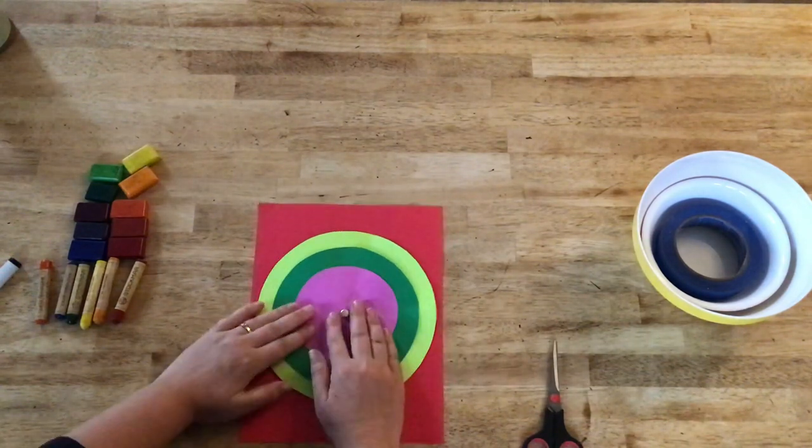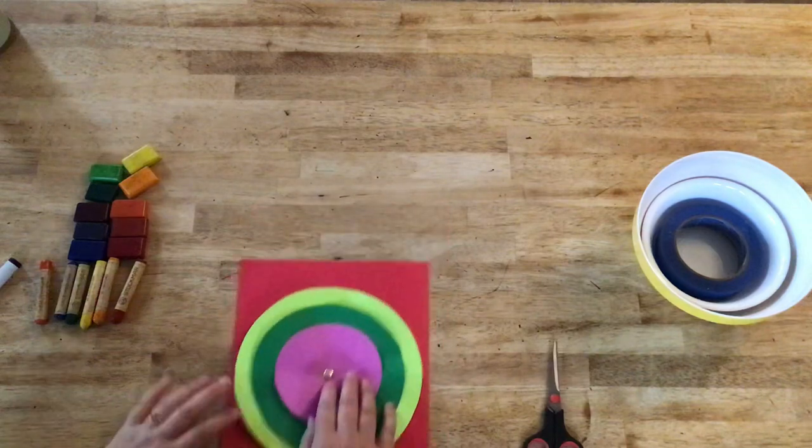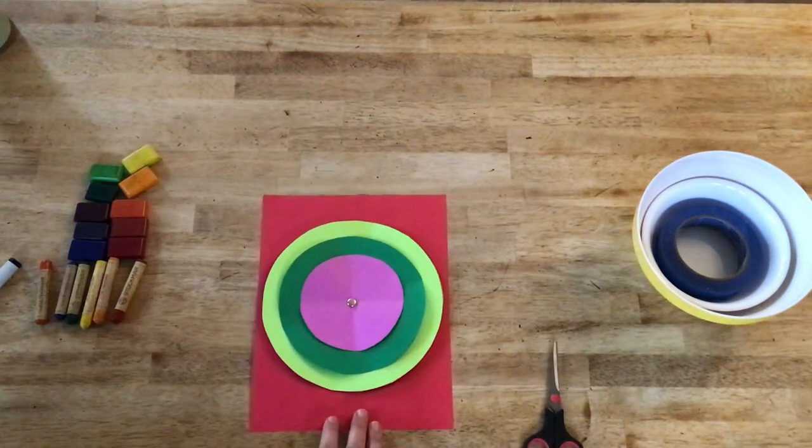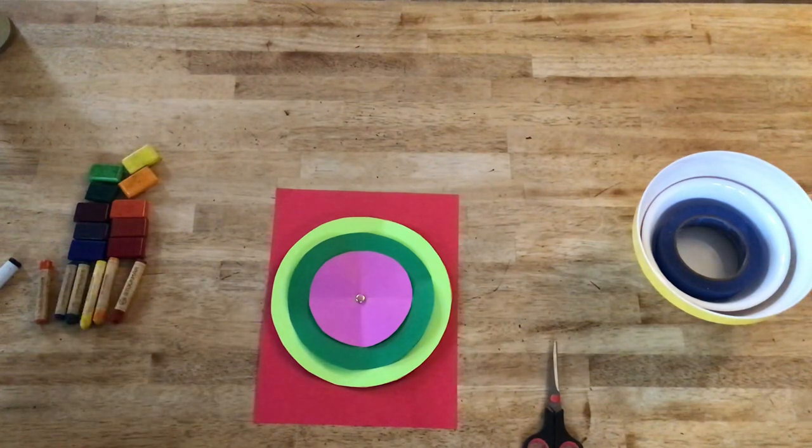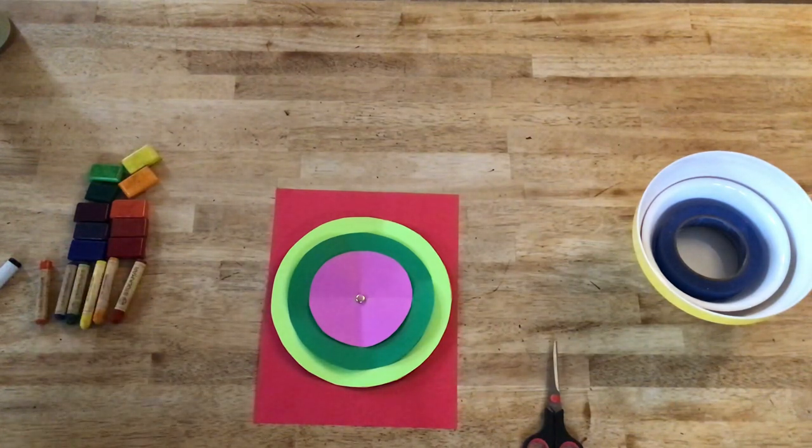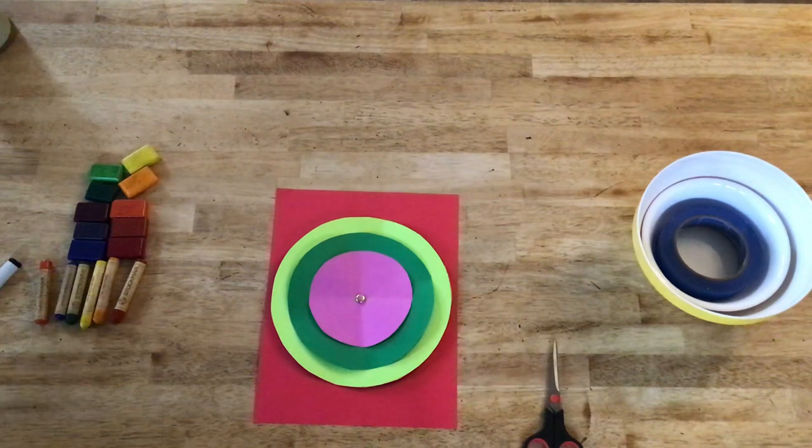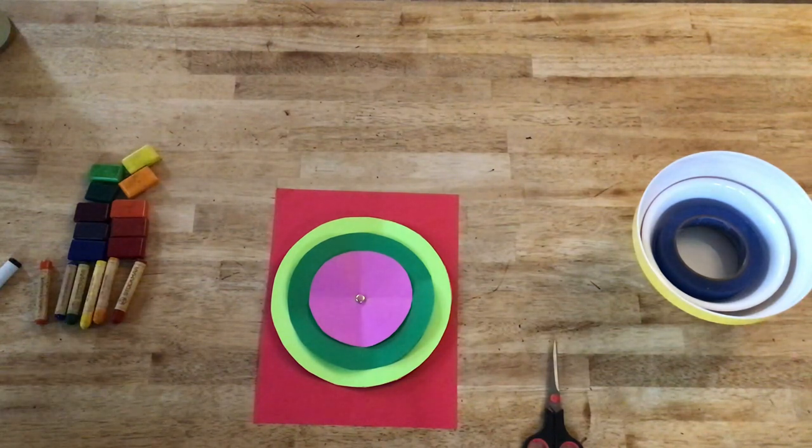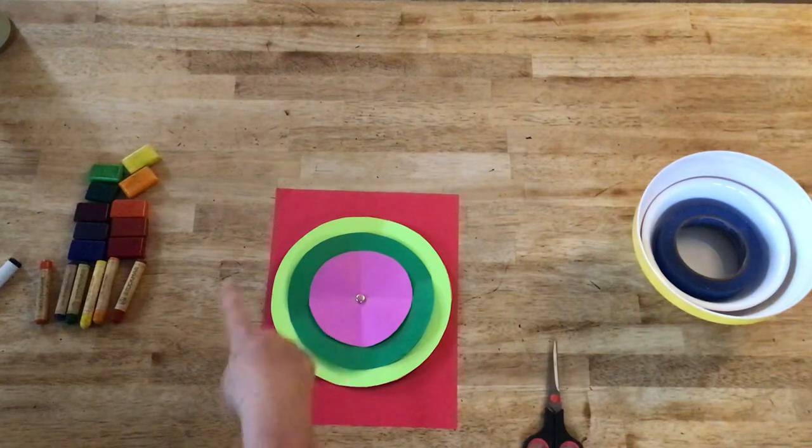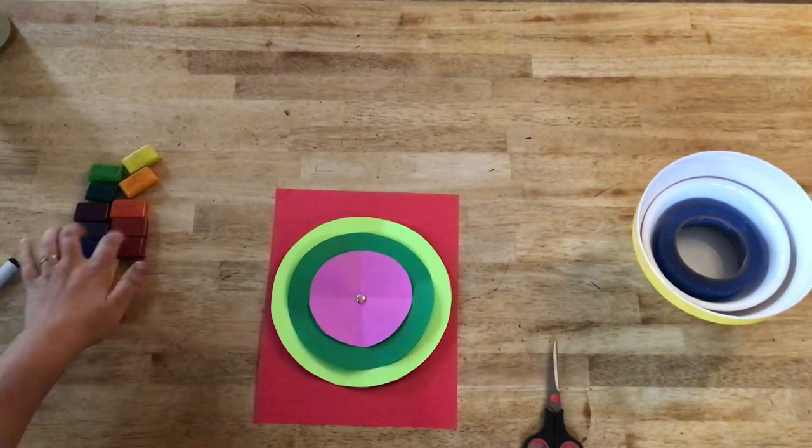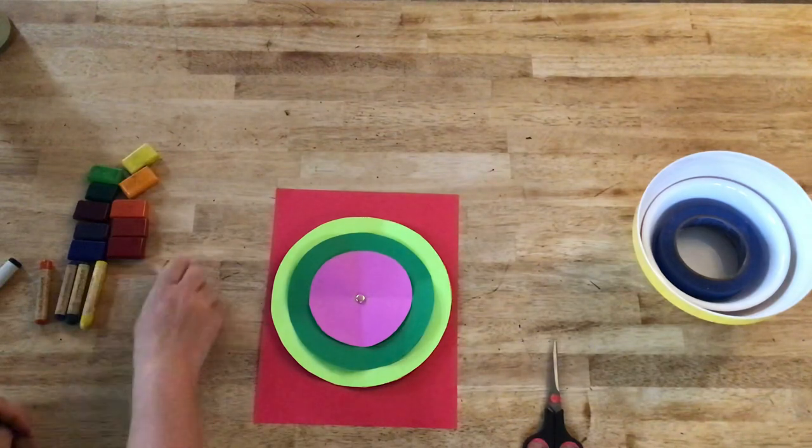And so there are 12 numbers. So how can we make that easier for us to do? Well, we can use crayons, we can use pencils, or we can use any kind of object to help us put down markers for where the spaces are. So I have two, four, six, eight, 10, 11, 12.